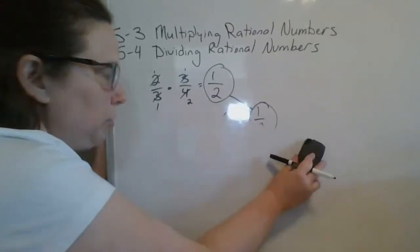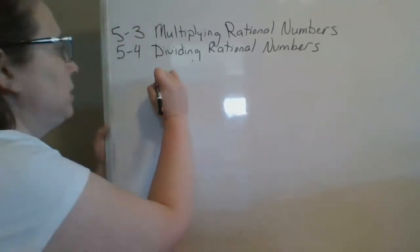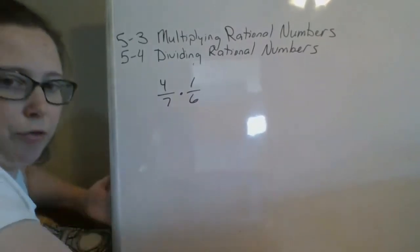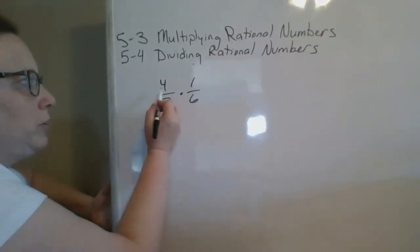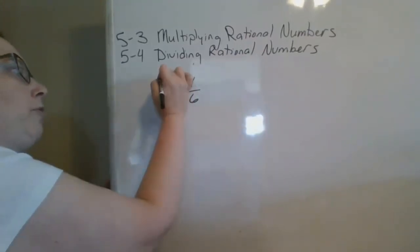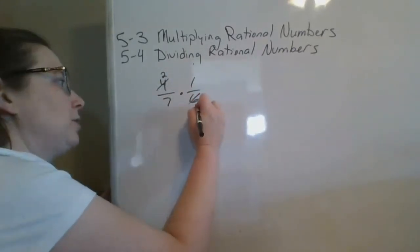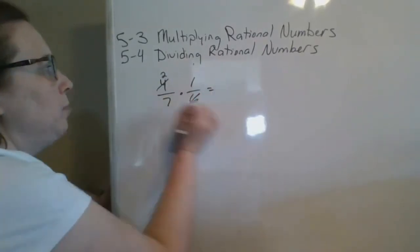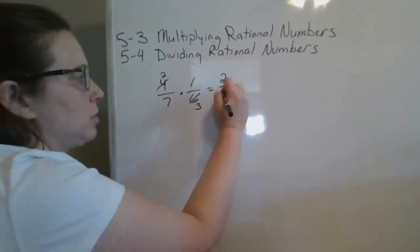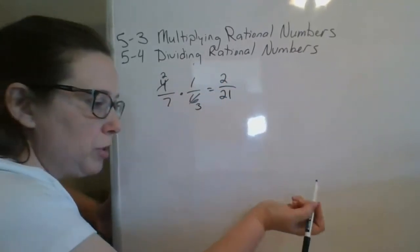Our next example is 4 sevenths times 1 sixth. We look for any common factors, and I notice 2 can go into both 4 and 6. So 4 divided by 2 is 2, 6 divided by 2 is 3. Multiply across the top: 2 times 1 is 2. Multiply across the bottom: 7 times 3 is 21. And that is my reduced answer.